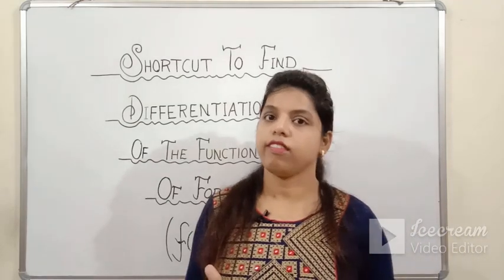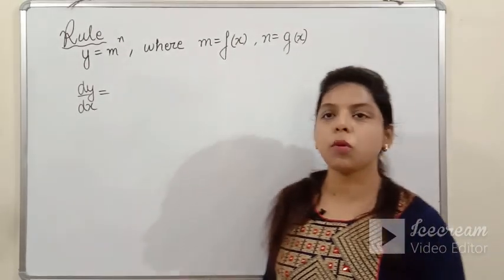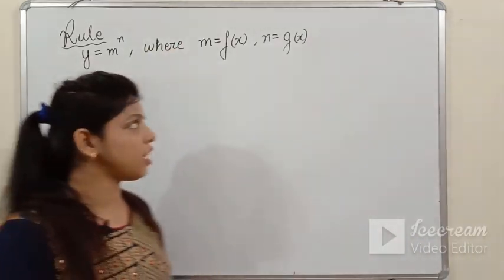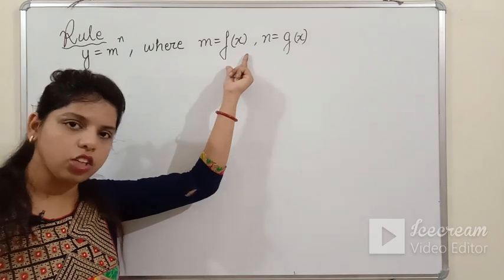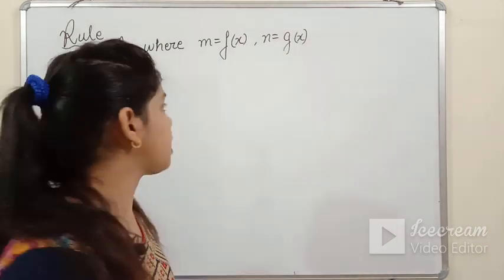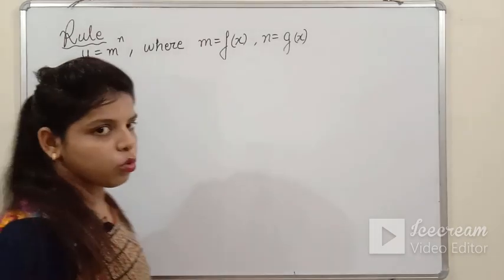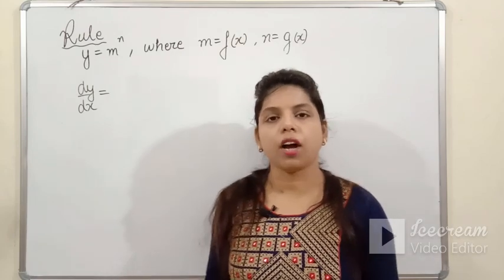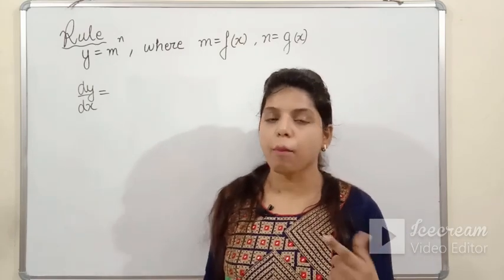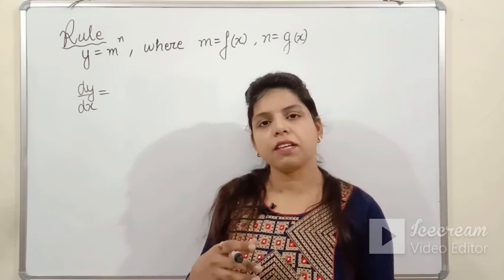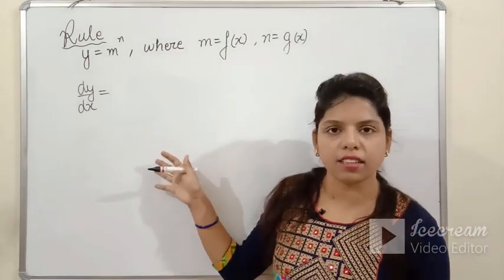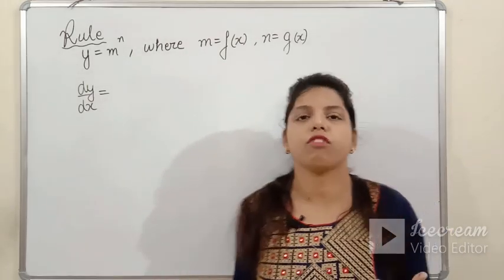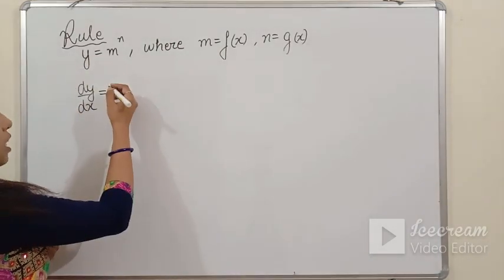Now let's start a super easy trick to find out the differentiation of a function of the type m raised to the power n, where m is a function of x and n is also a function of x. This rule is connected to the rule I told you in my earlier video, so if you've seen that video, you will easily understand this method too.